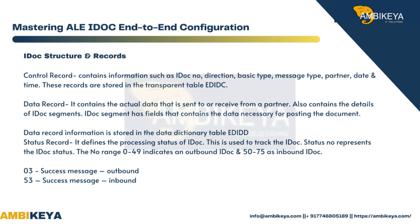The Status record defines the processing status of the IDOC and is used to track it. The status number represents the IDOC status. The number range 0 to 49 indicates an outbound IDOC, and 50 to 75 indicates an inbound IDOC.